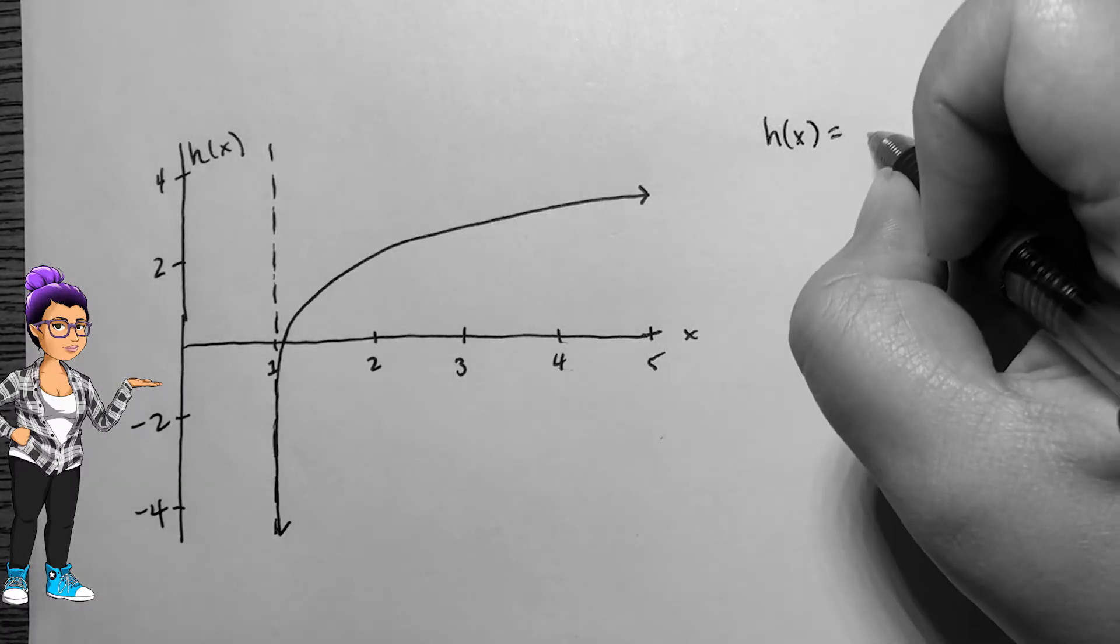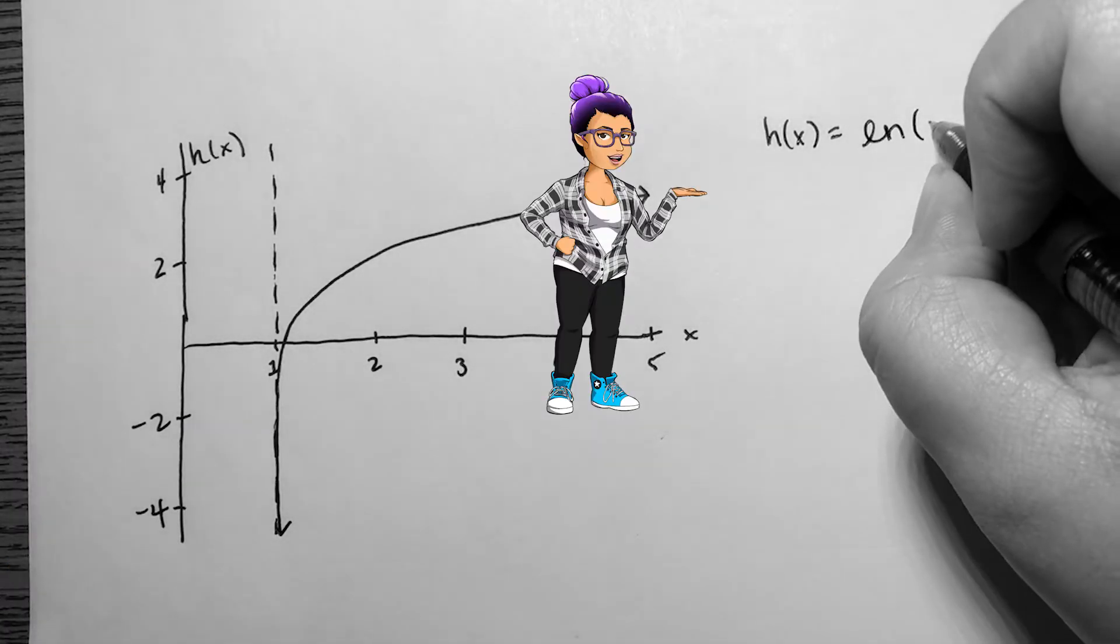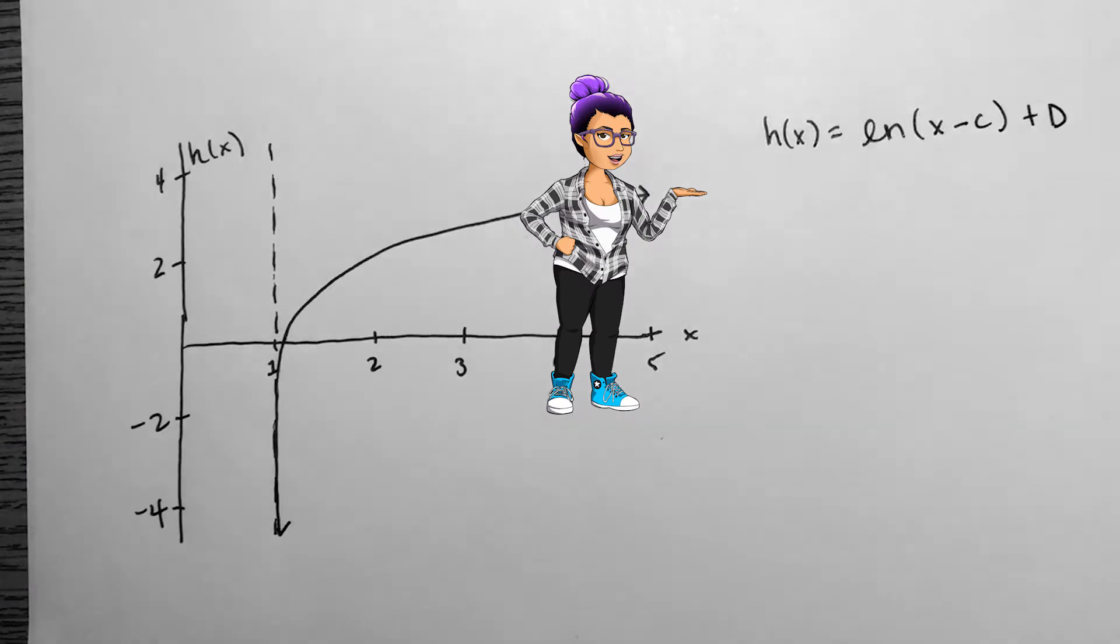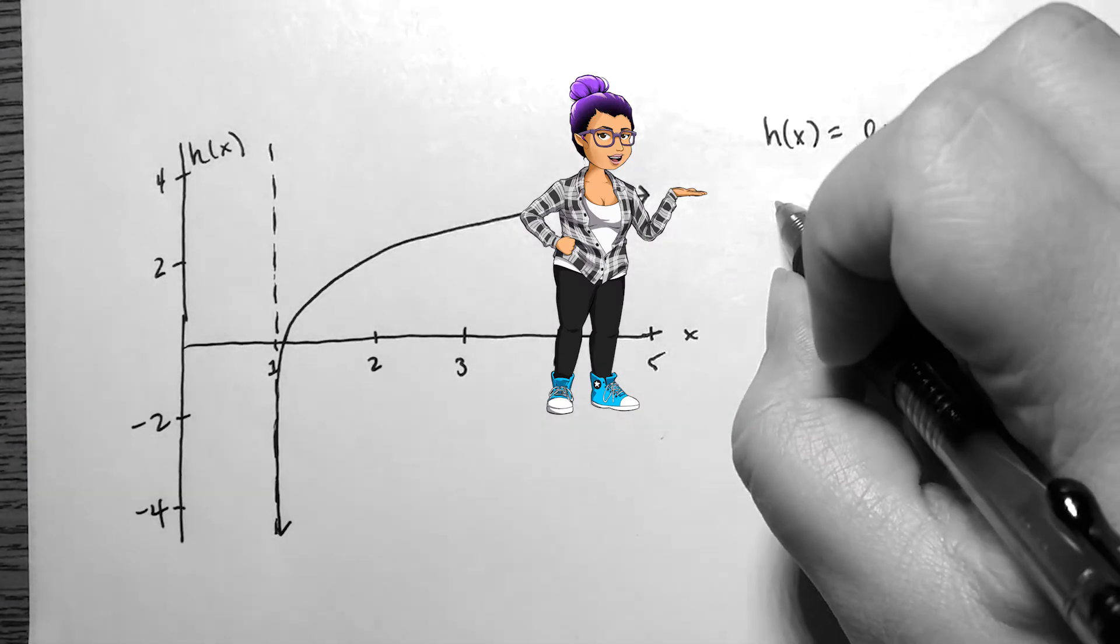Given this graph, I can see the c value from the vertical asymptote. I'll start by saying h of x equals natural log of x minus 1 plus d.